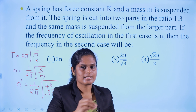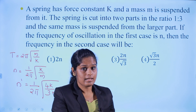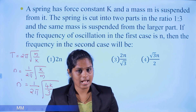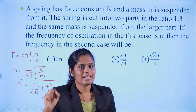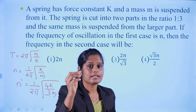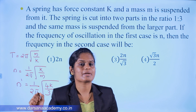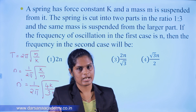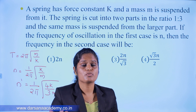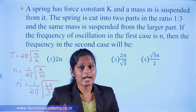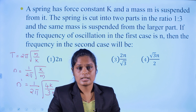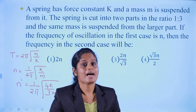This is very simple. The larger part is equal to n times the smaller part. The larger part has spring constant k(n+1)/n, and the smaller part has spring constant k(n+1). In the first case, the time period is 2π√(m/k) and the frequency is (1/2π)√(k/m). In the second case, the time period uses 4k/3, giving frequency (1/2π)√(4k/3m), which simplifies to (2/√3) × (1/2π)√(k/m).